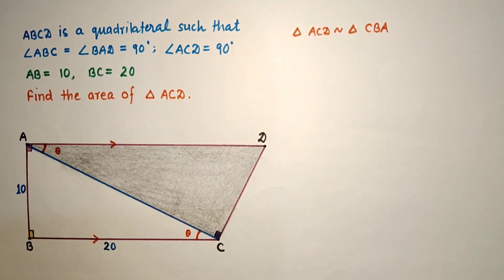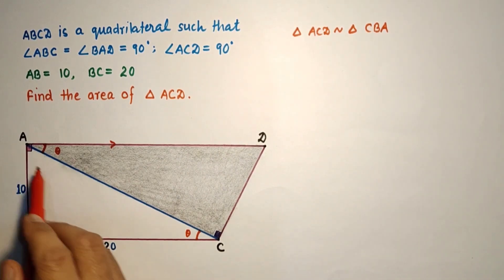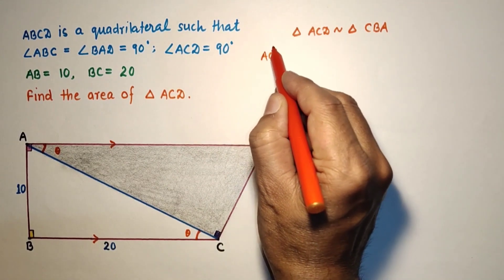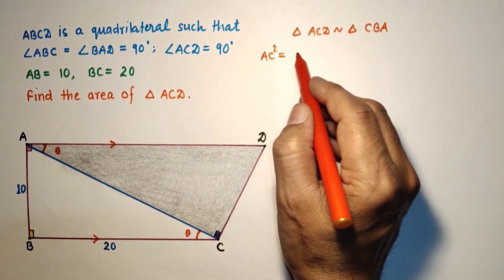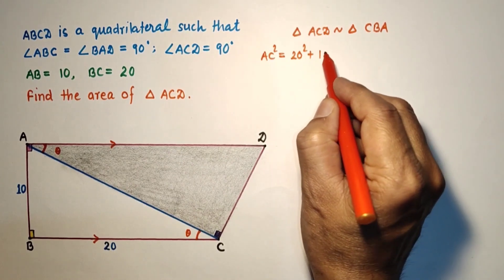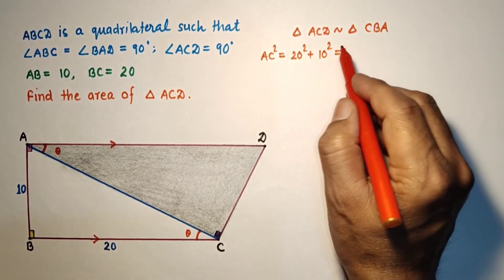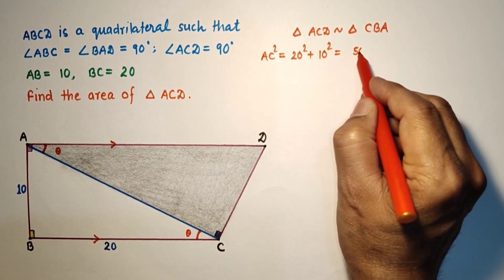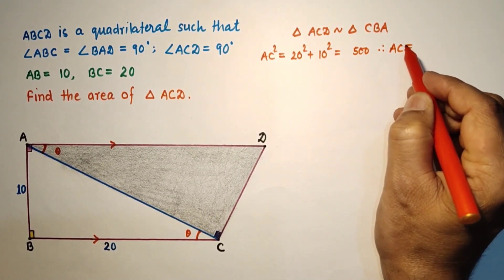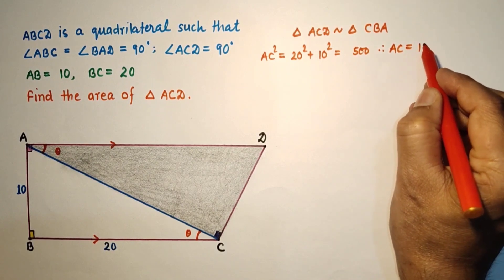By AA test these two are similar, and we can find AC by using Pythagoras theorem. So AC squared equals BC squared, which is 20 squared, plus AB squared, which is 10 squared, which is 400 plus 100 equals 500. Therefore, we can say that AC is the square root of 500, which is 100 times 5, so 10 root 5 units.